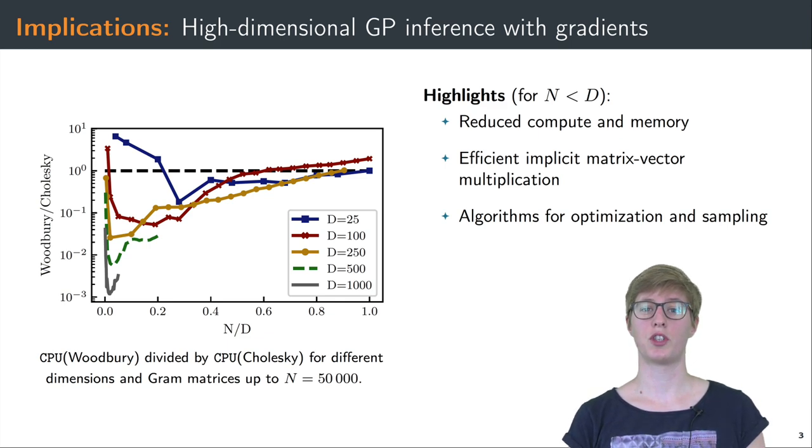In the paper, we also show how it is possible to avoid building the gram matrix explicitly, and we apply these improvements to algorithms for optimization and sampling.